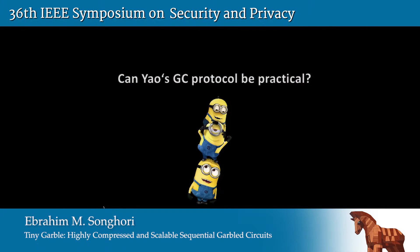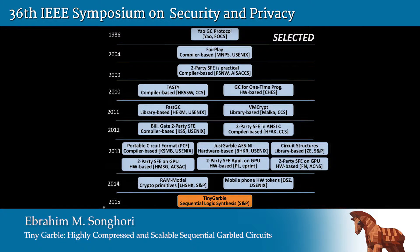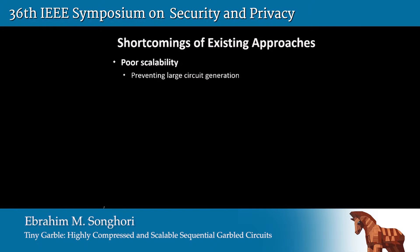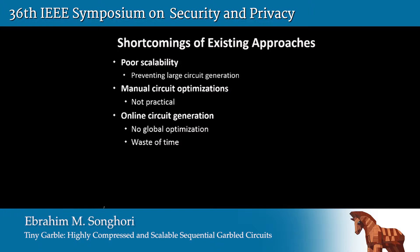So the question is, can this protocol be practical? Thanks to lots of people's work, it has been practical since 2004 — for a decade. This is the chronology of work on the implementation of garbled circuits. Many of this work tries to implement a compiler or library to solve the first step: making a Boolean circuit from a function description. Still, there are some shortcomings. Poor scalability prevents users from making large circuits. Some require users to manually optimize their circuit. Some use online circuit generation, which doesn't provide global optimization and wastes garbling time.